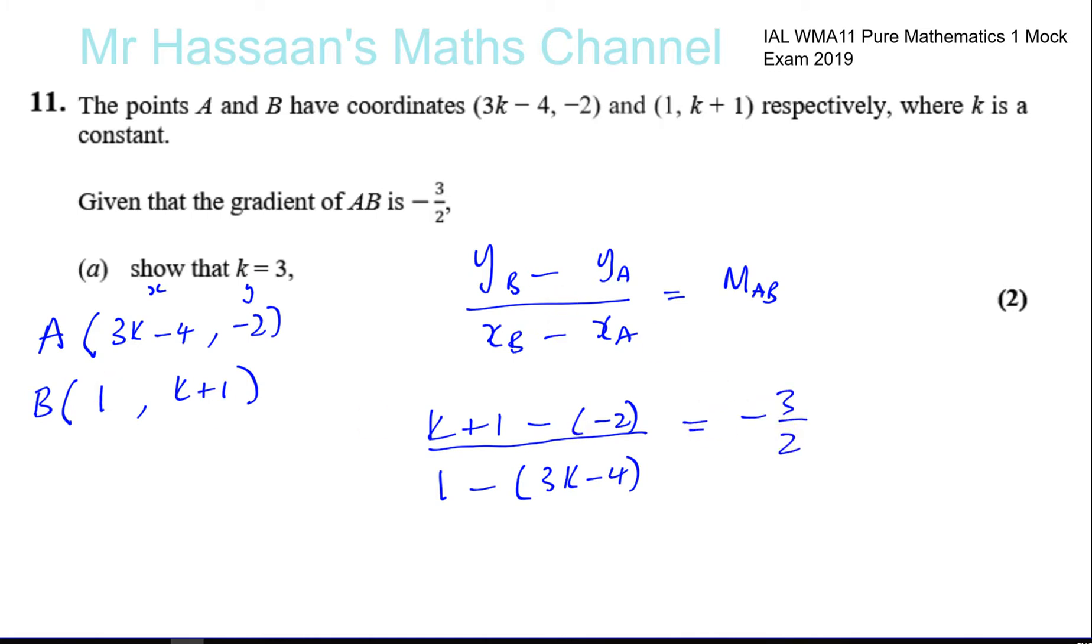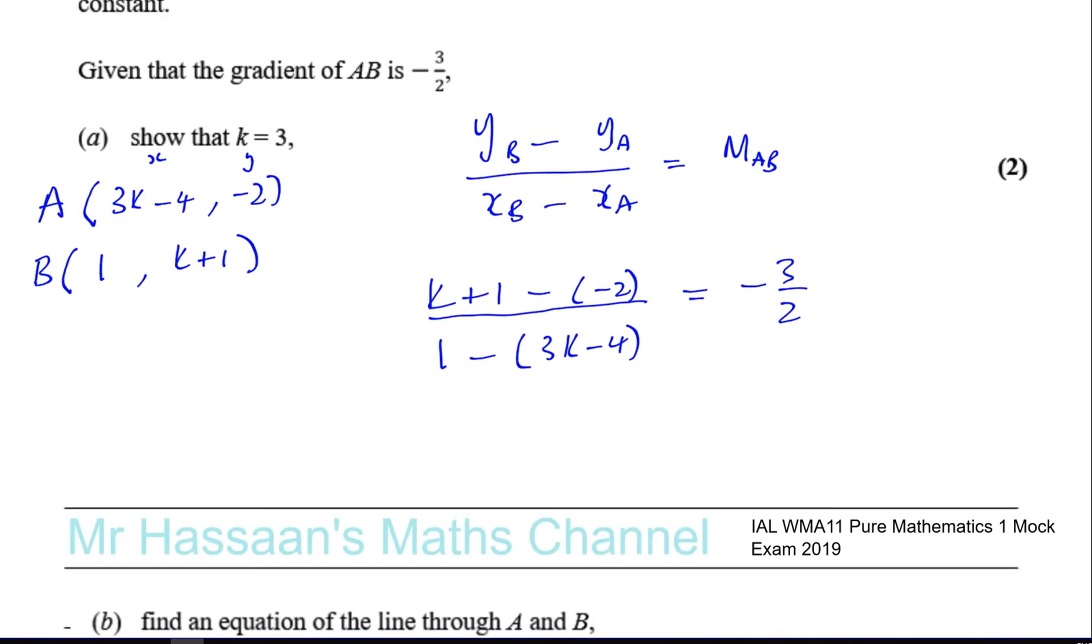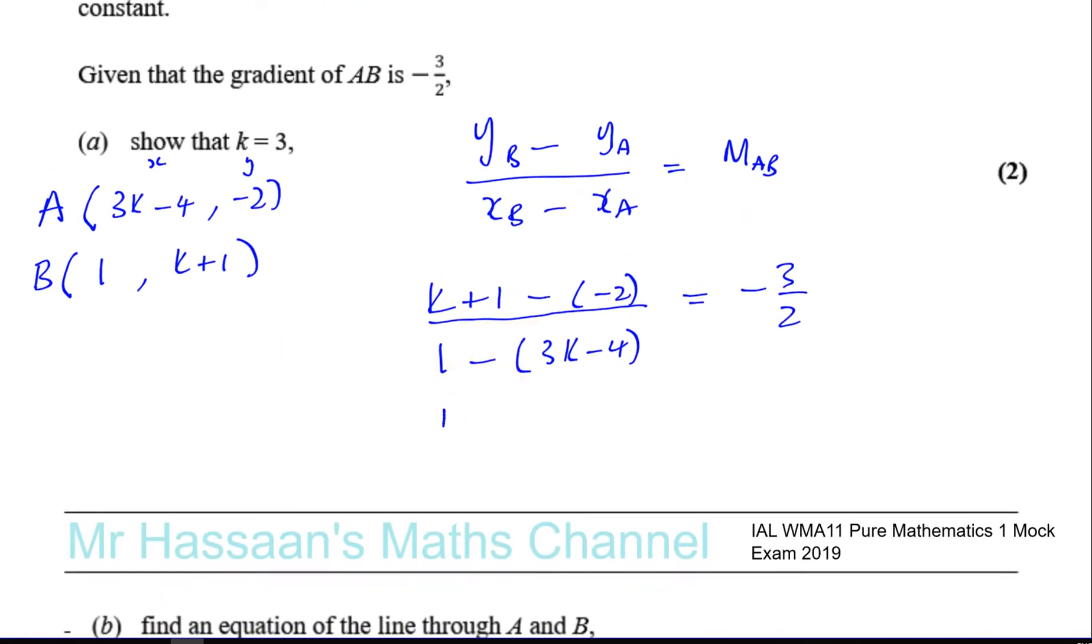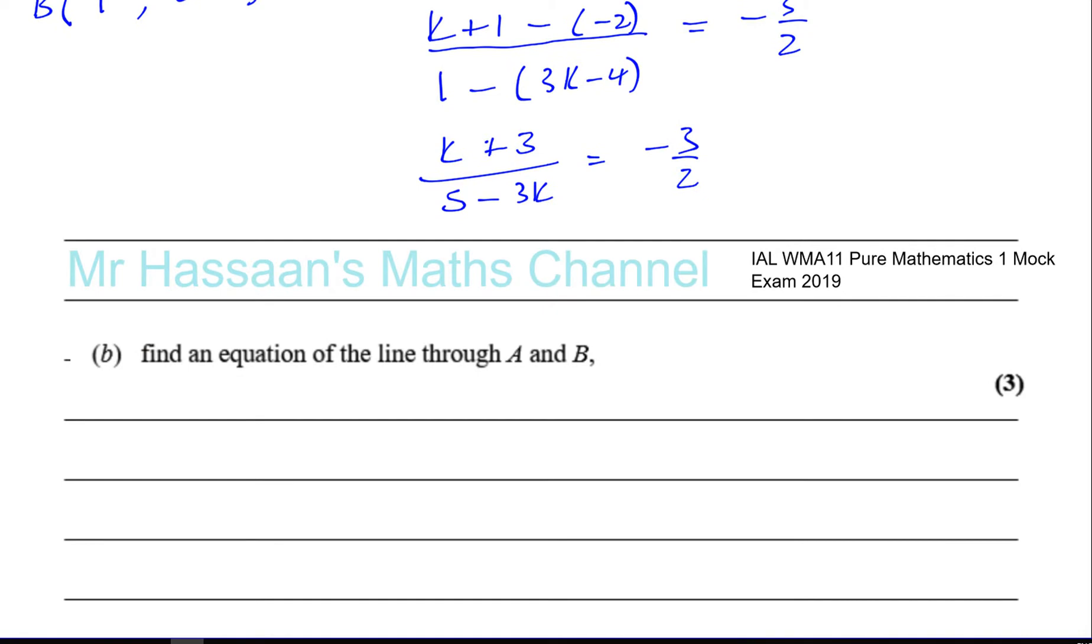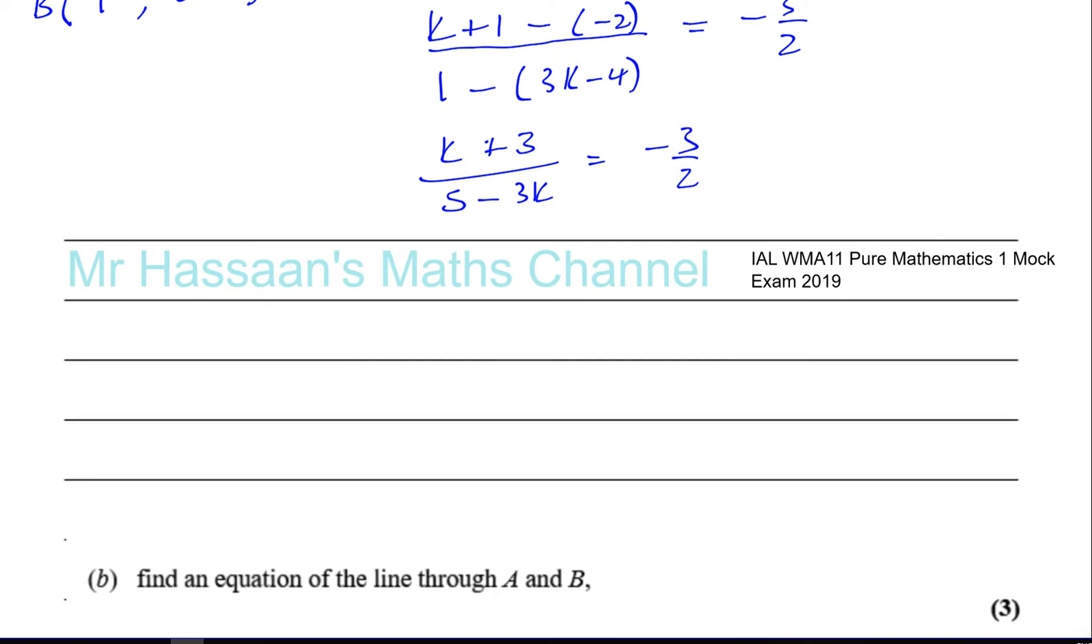So we have formed an equation now and k is unknown, so we have to solve, find what k is. So we can say that k + 1 + 2, which is k + 3, this is minus minus 3 plus, over, and you're going to have 1 - 3k + 4. So, of course, you'll end up with 5 - 3k, and that's equal to -3/2. Okay, I need to make some more space here. Let's move these down a bit.